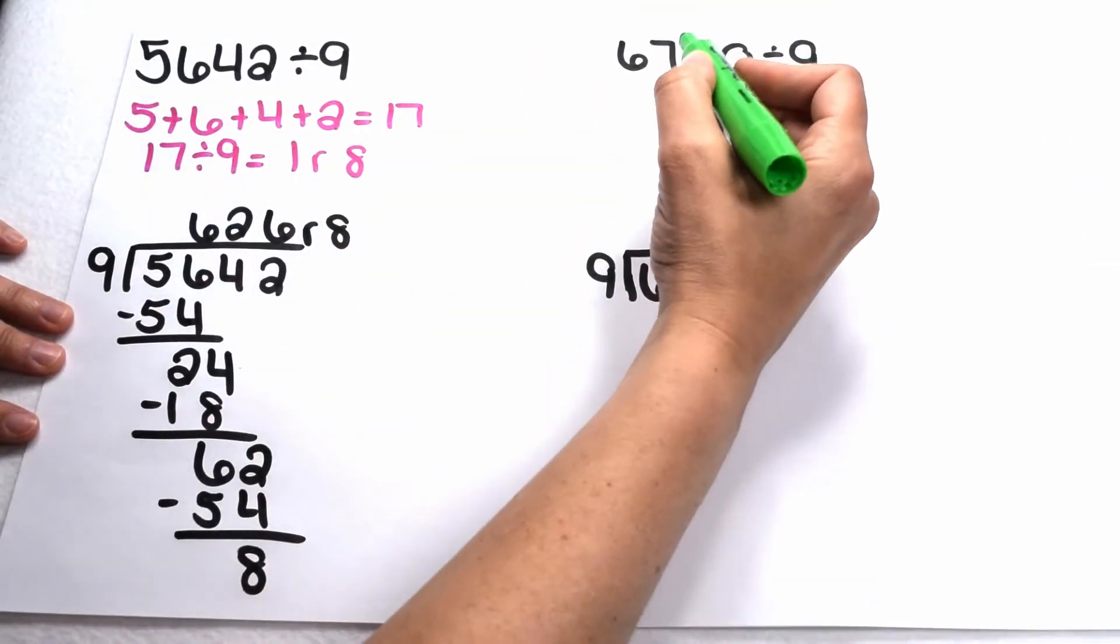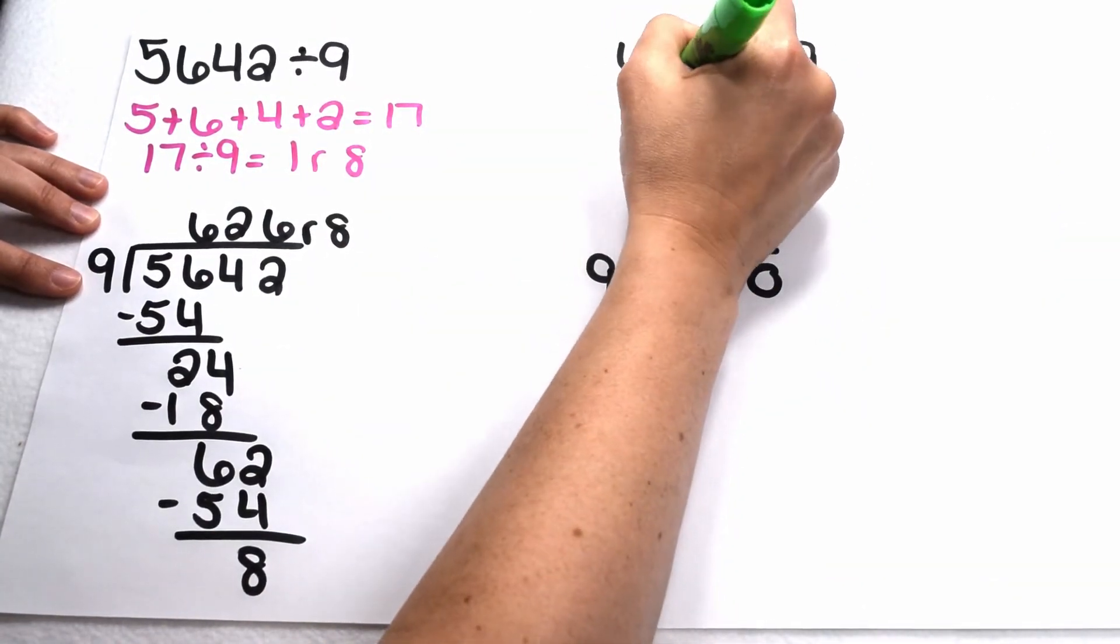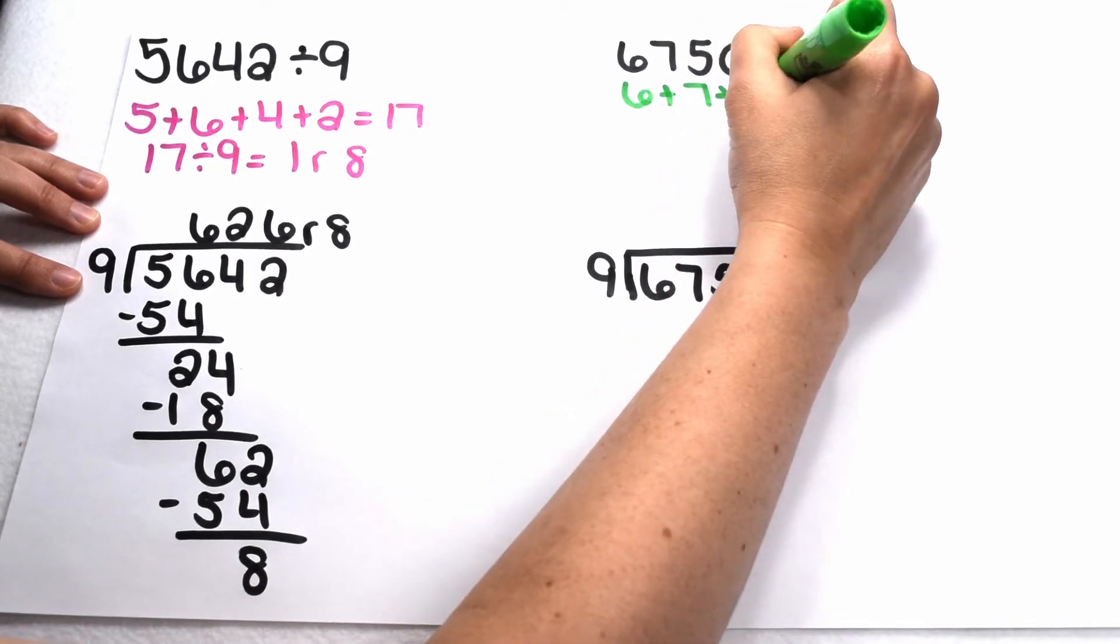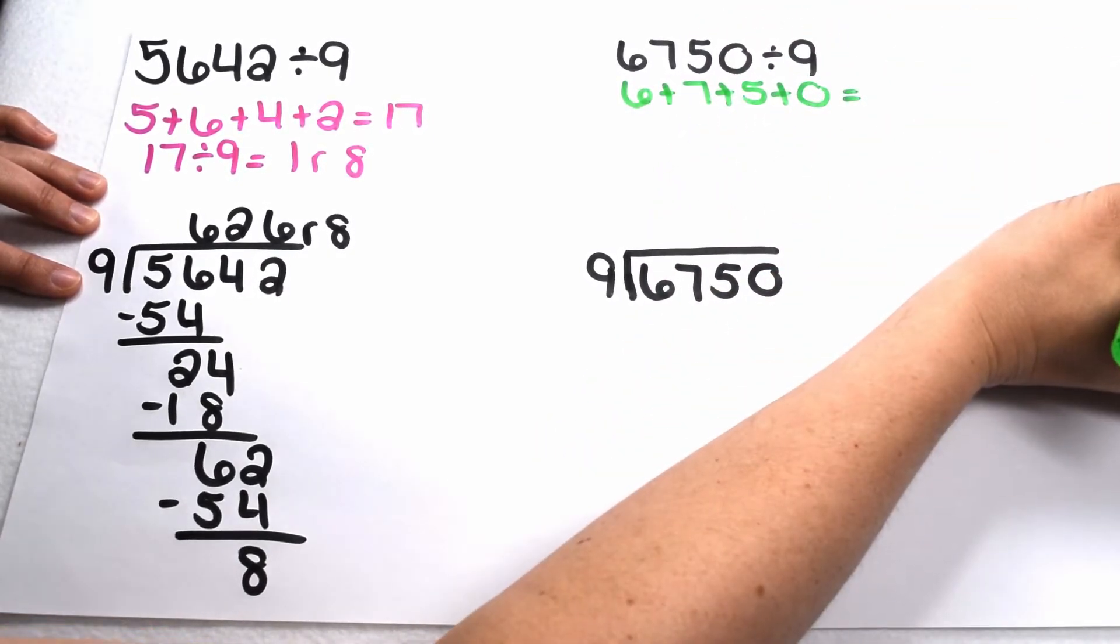Let's try this on a different value: 6,750 divided by 9. If 6,750 is divisible by 9, the sum of its digits should be divisible by 9.